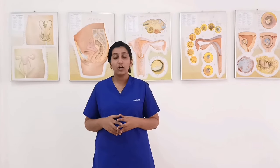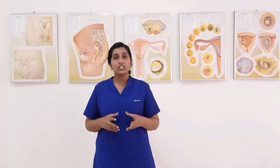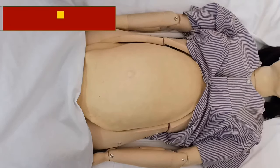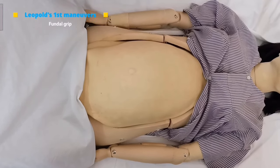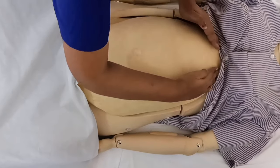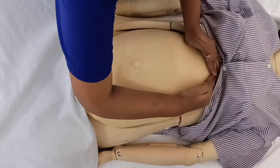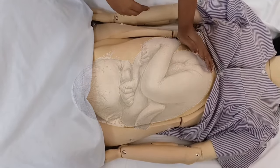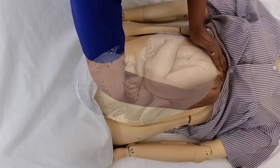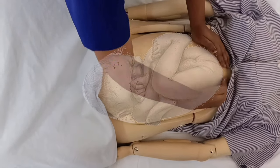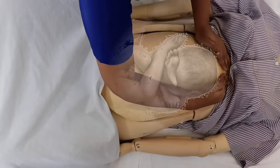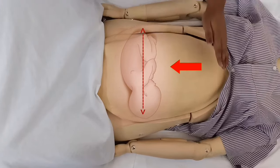Let us now begin with abdominal palpation. Abdominal examination is conducted systematically by employing all four maneuvers described by Leopold. For the first three maneuvers, the examiner faces the mother's face; for the fourth maneuver, the examiner faces the patient's feet. Leopold's first maneuver is also known as the fundal grip. The fundus is palpated with both hands to identify the fetal form occupying the uterine fundus. In cephalic presentation, buttocks of the fetus are felt at the fundus as large, soft, irregular, nodular, and non-ballottable. In breech presentation, the head is felt at the fundus as hard, smooth, round, compact, mobile, and ballottable. In transverse lie, the grip is empty.